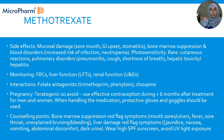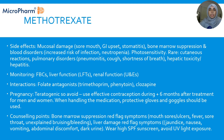Counselling points for methotrexate: first, looking out for red flag symptoms of bone marrow suppression — mouth sores and ulcers, fever, flu-like symptoms, sore throat, unexplained bruising and bleeding. Second, liver damage red flags — nausea, jaundice (yellowing of the eyes and skin), abdominal discomfort, and dark urine. And finally, counselling on photosensitivity: advise patients to wear sunscreen with high SPF, avoid unnecessary direct light exposure especially in the middle of the day, and avoid sunbeds.